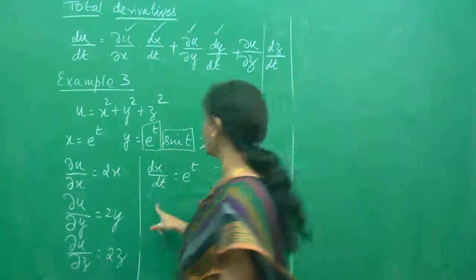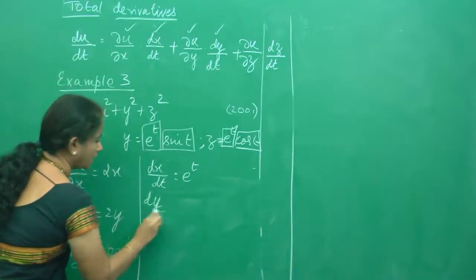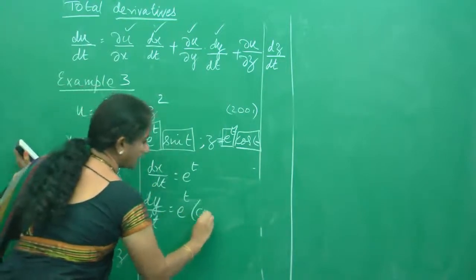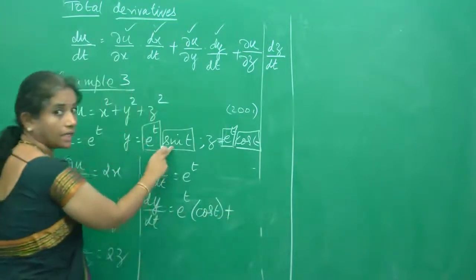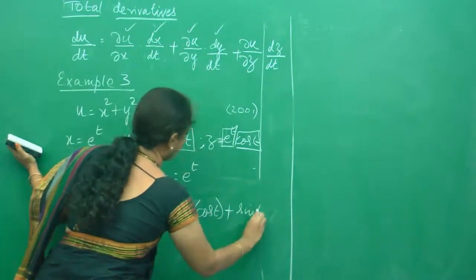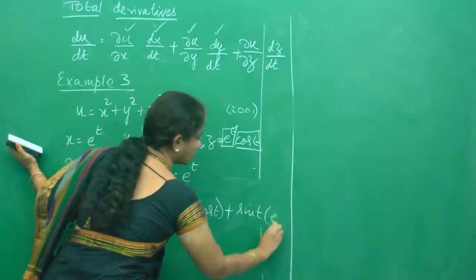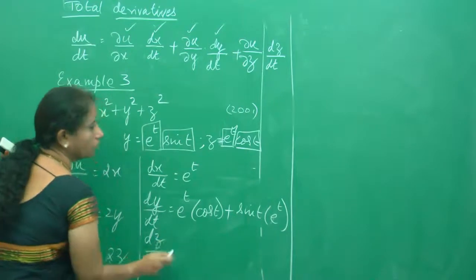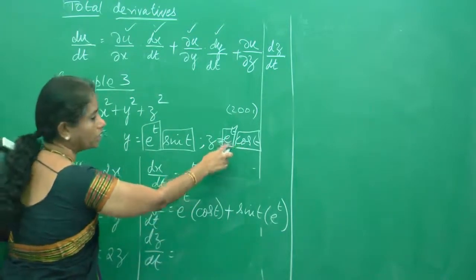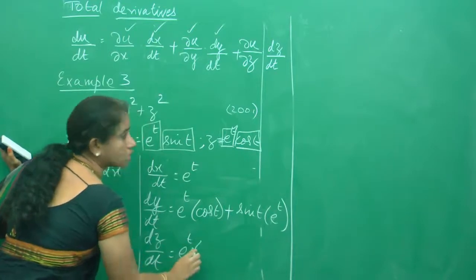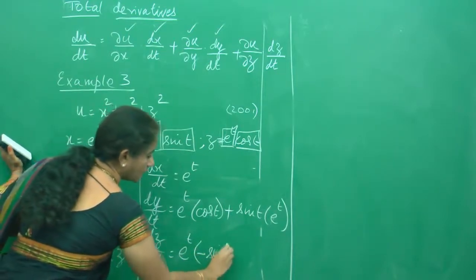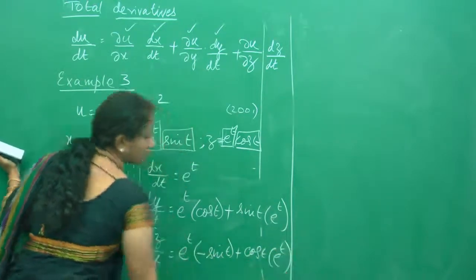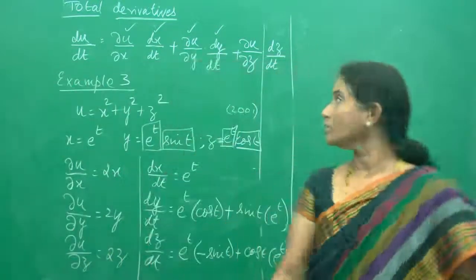So dx by dt is e power t. dy by dt by the product rule: keep e power t as it is, sine t derivative is cos t, plus sine t keep it as it is, and derivative of e power t is e power t. Same way for dz by dt — again product rule: keep e power t as it is, what is the derivative of cos t? Minus sine t, plus keep cos t as it is, derivative of e power t is e power t. So we have calculated all the values now and just need to plug them into the equation.